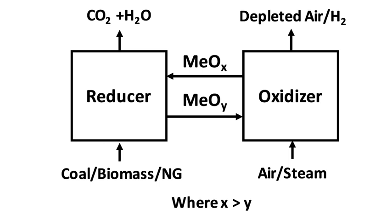Chemical looping combustion uses two or more reactions to perform the oxidation of hydrocarbon-based fuels. In its simplest form, an oxygen-carrying species, normally a metal, is first oxidized in air forming an oxide. This oxide is then reduced using a hydrocarbon as reducer in a second reaction. As an example, an iron-based system burning pure carbon would involve two redox reactions.